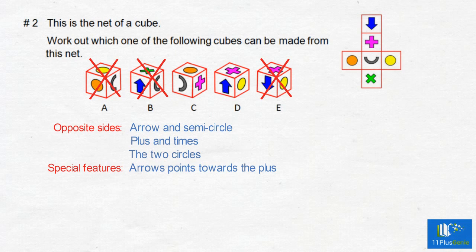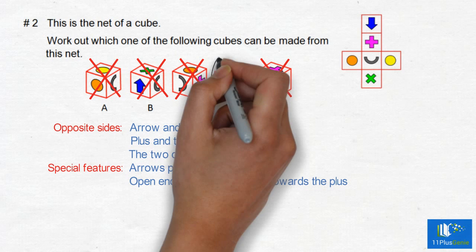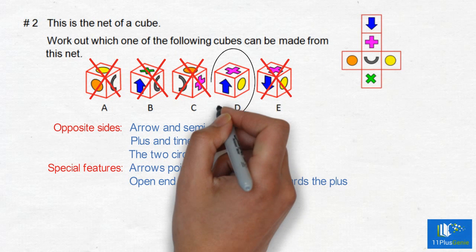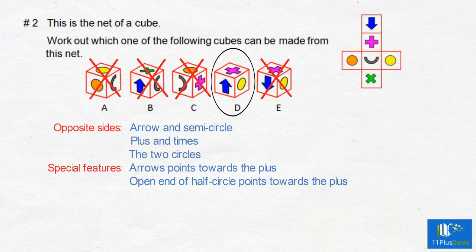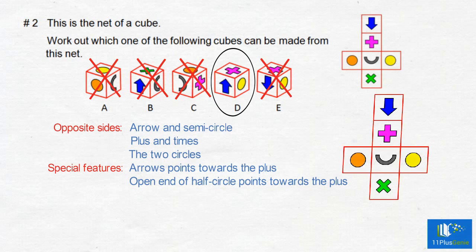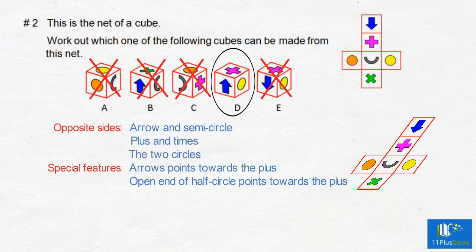Looking at special features: the arrow must point towards the plus sign — we can eliminate E because the arrow points away from the plus sign. The open end of the half circle must be next to the plus sign — we can eliminate C and D because the half circle points away from the plus. The correct answer is D. This is what the folded cube will look like.